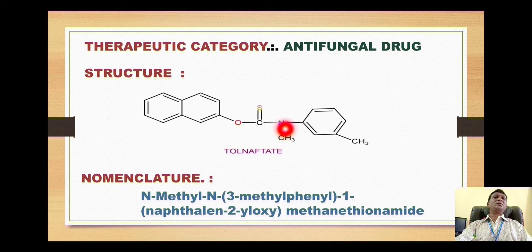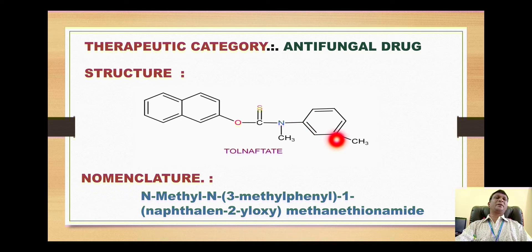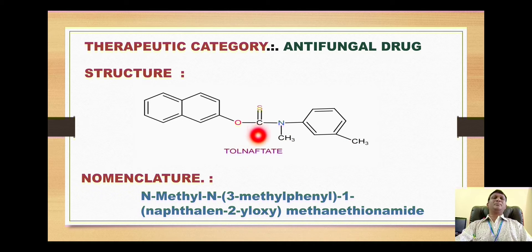On the nitrogen of this amide we have a methyl group, so it is N-methyl. Again on nitrogen there is another substituent called 3-methylphenyl, because the numbering starts from carbon 1, then 2, then 3, making it 3-methylphenyl. On this carbon, portion number 1, we have a naphthalene ring attached with oxygen.